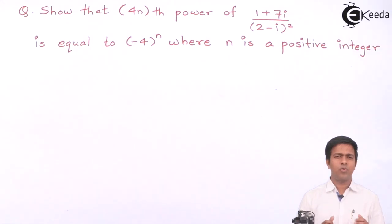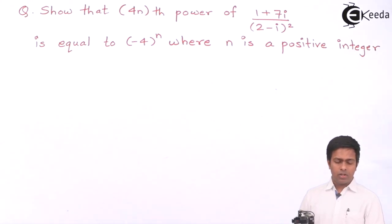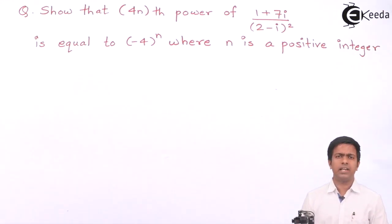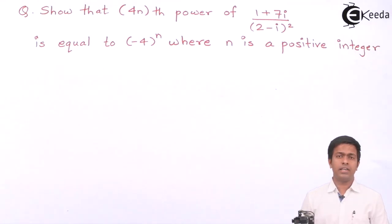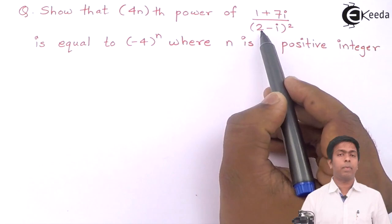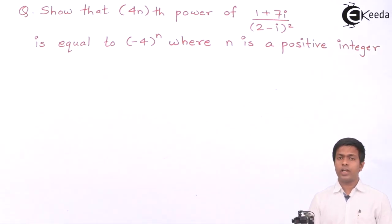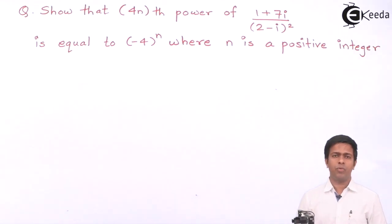We use De Moivre's theorem whenever we want to find the power of a complex number. In this question we need the 4nth power, so we will use De Moivre's theorem. The given complex number is not in standard form. Standard form means one real part and one imaginary part — x plus iy. Our number (1 + 7i) / (2 - i) squared has two real parts and two imaginary parts, so we must first convert it.